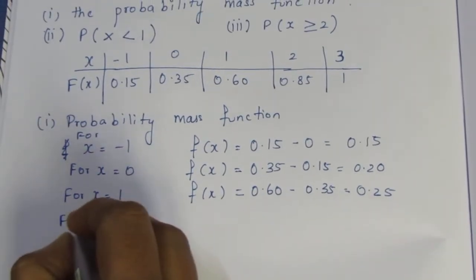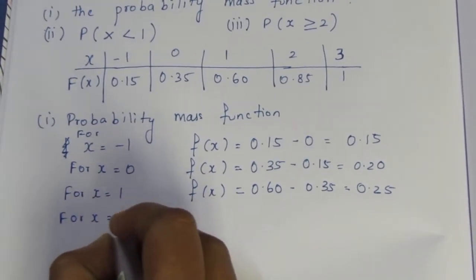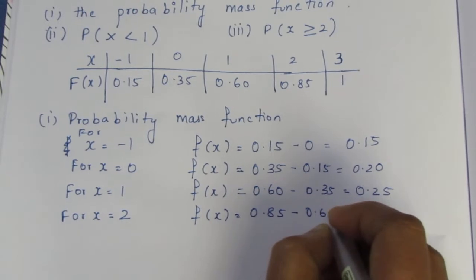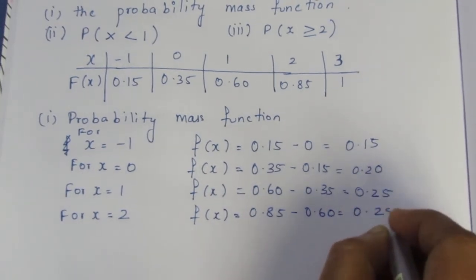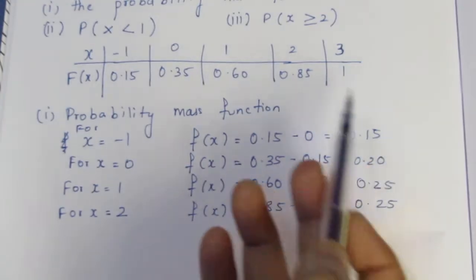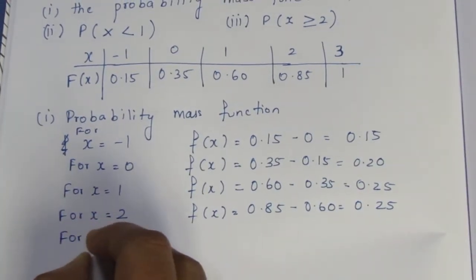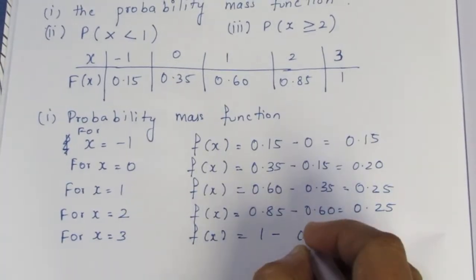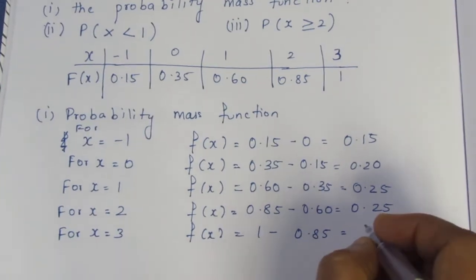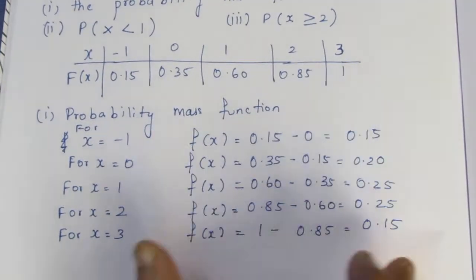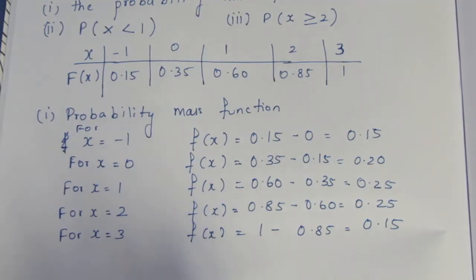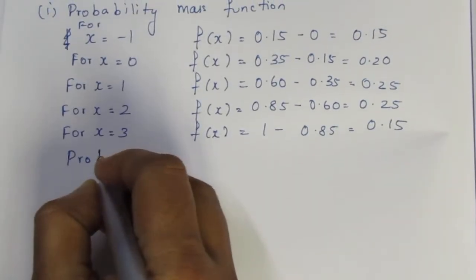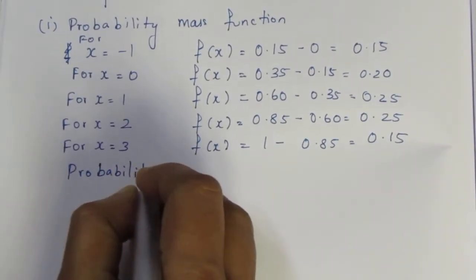Next, for x equal to 2: f(2) = F(2) minus F(1) = 0.85 minus 0.60 = 0.25. And for x equal to 3: f(3) = 1 minus 0.85 = 0.15.